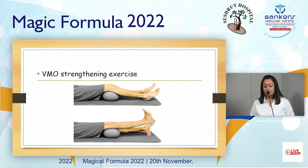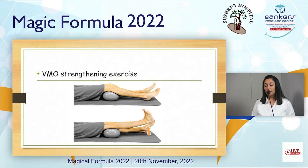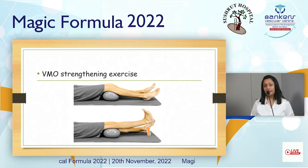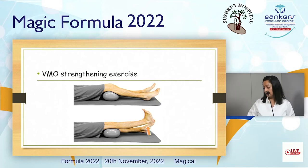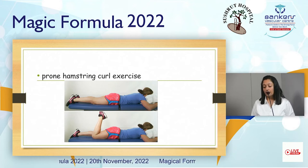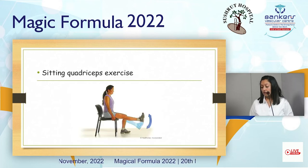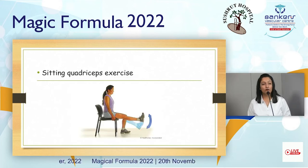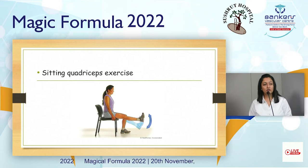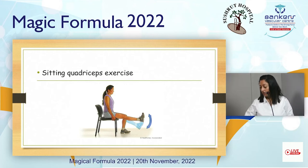Vastus medialis strengthening — VMO strengthening — helps in balance and stability and builds strength. Prone hamstring curl exercise will make your hamstrings strong. Sitting quadriceps exercise will strengthen your quadriceps and also improve stability.